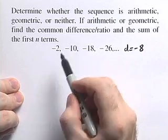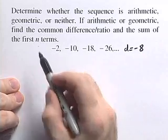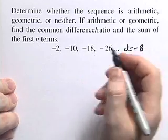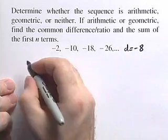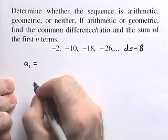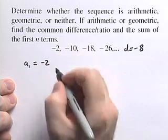Since we found our common difference, we next want to find the sum of the first n terms. To do that, we want to find our first term, a sub 1. That's going to equal negative 2. It's given to us here.